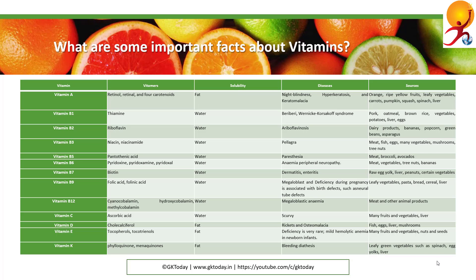Vitamin B12 vitamins are cyanocobalamin, hydroxycobalamin, and methylcobalamin. It is soluble in water and deficiency can cause megaloblastic anemia. It can be found in meat and other animal products.